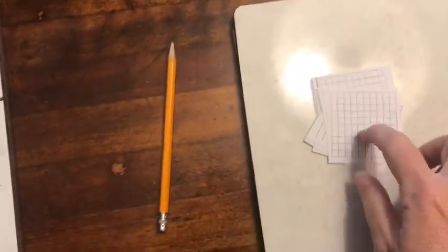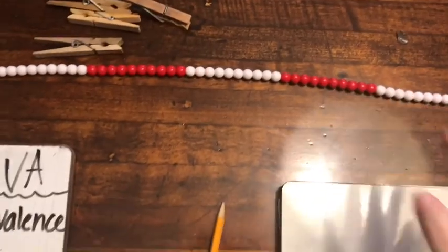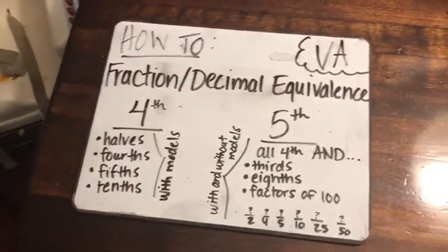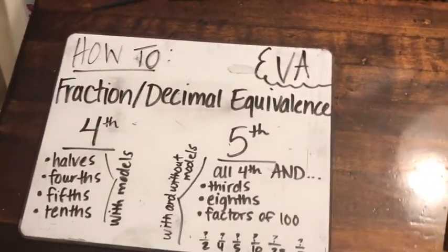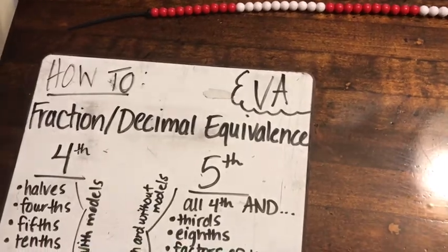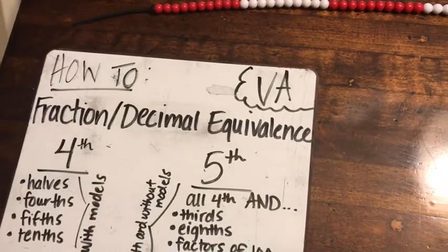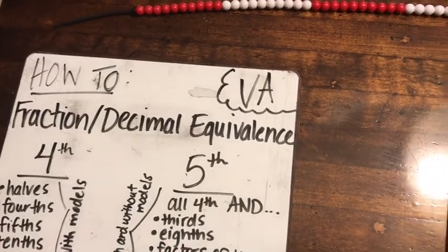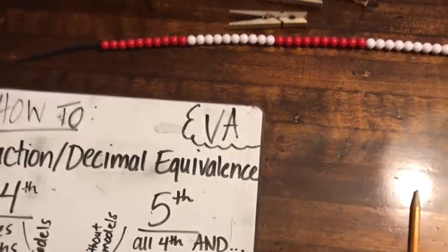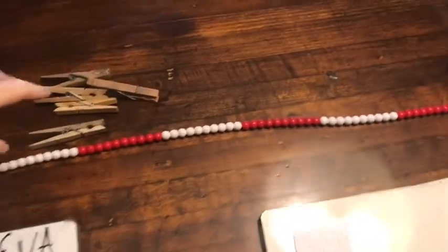Over here I have two of my go-to models: decimal grids and a beaded number line. We're going to start with halves. I will first ask students: what does halves mean? Students know halves means two equal parts make a whole — hopefully by fourth grade. If not, we're going to teach them.